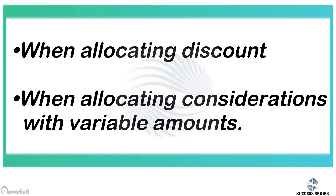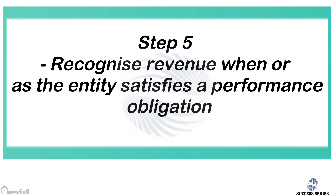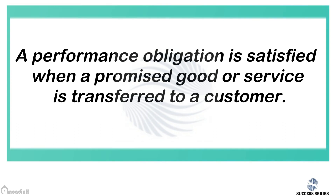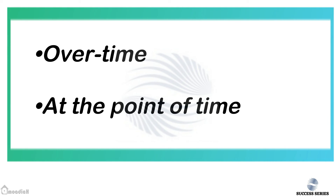The final step, step five, is to Recognize Revenue when or as the entity satisfies a performance obligation. A performance obligation is satisfied when the promised good or service is transferred to the customer. When this transfer is made, control has passed. A performance obligation can be satisfied either over time — that is, over a period of time — or at a point in time.